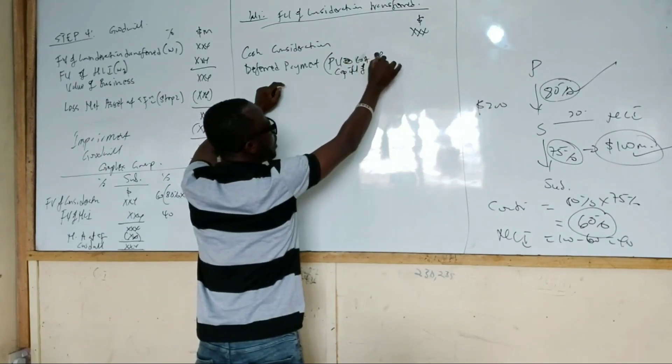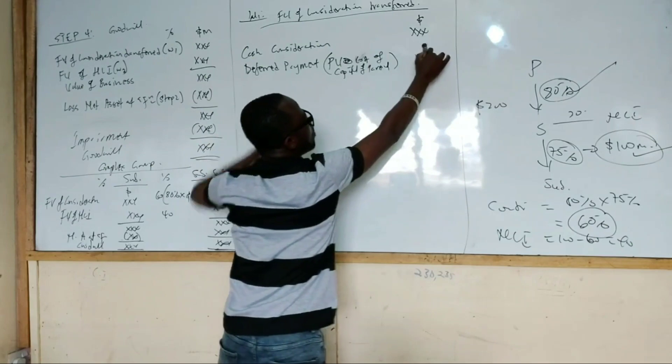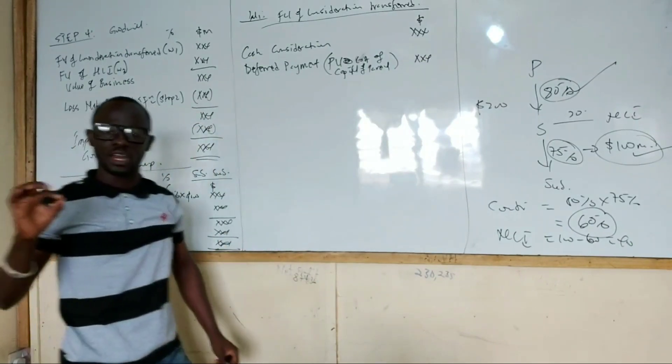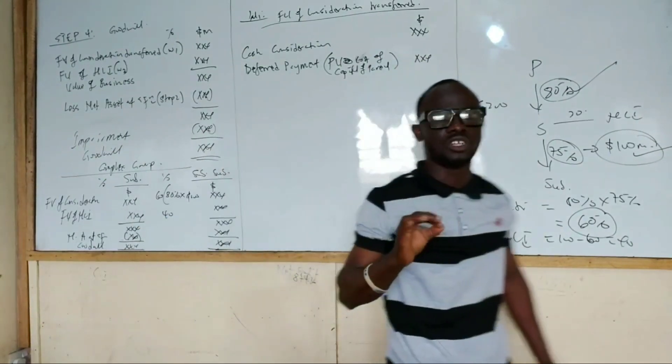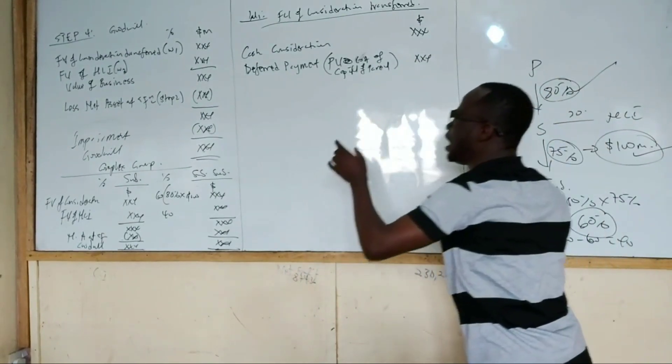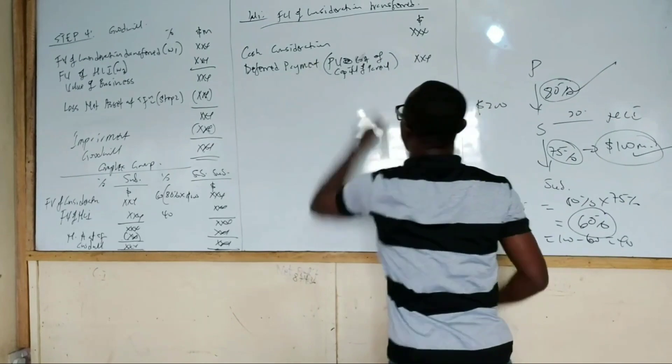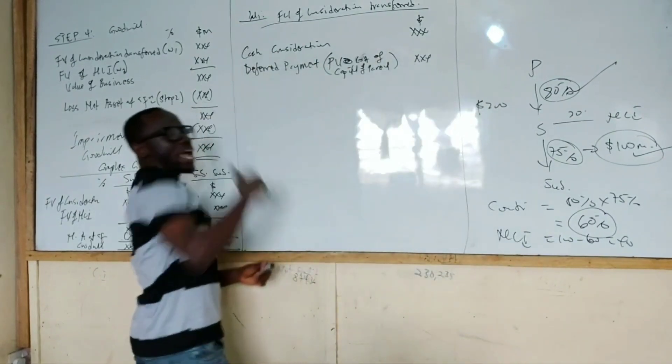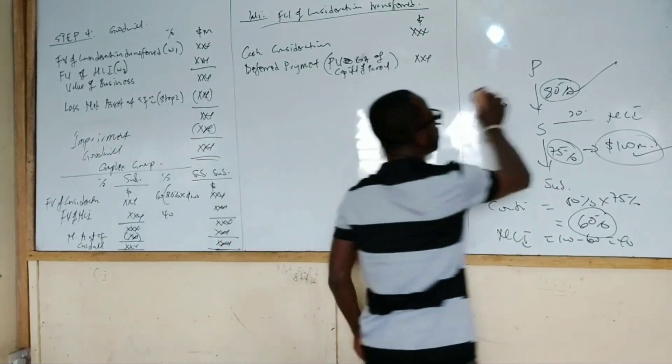That will be brought to present value. So that is the second component of fair value of consideration transfer. Please note that anytime there is this deferred payment, we need to unwind it and charge finance costs every year.